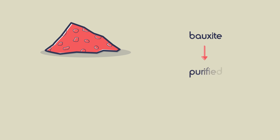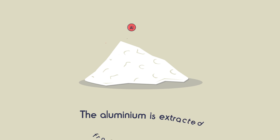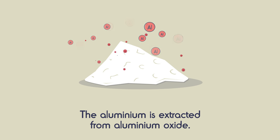Bauxite is purified to yield aluminium oxide, which is a white powder. Aluminium is then extracted from the aluminium oxide.